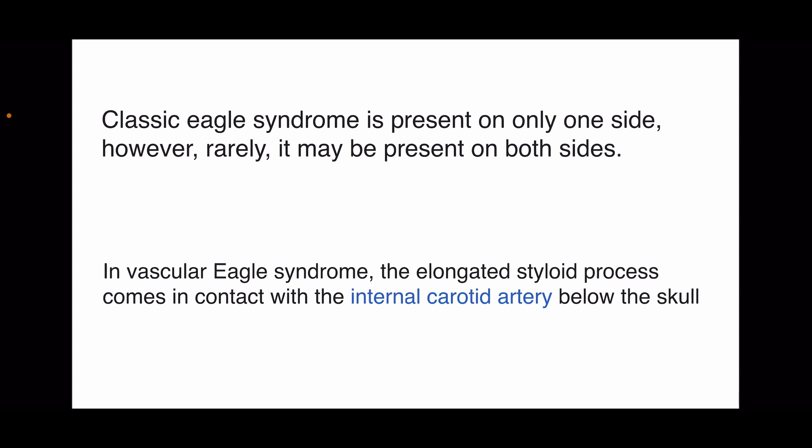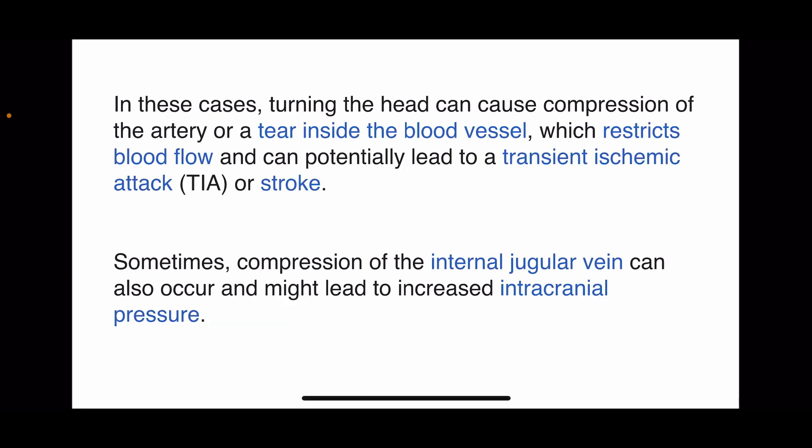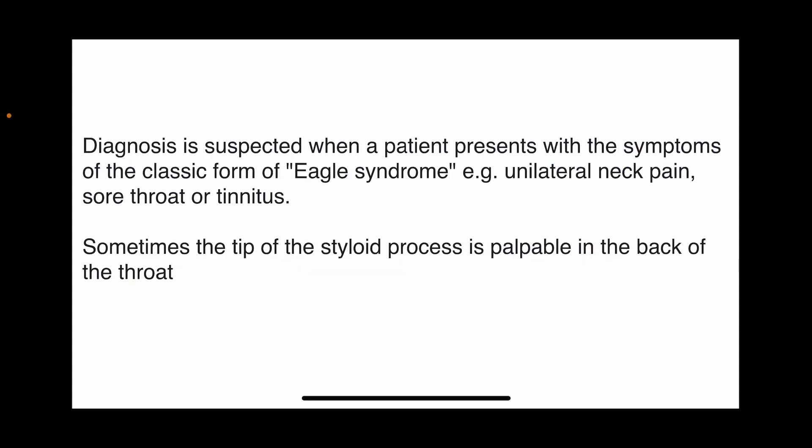In vascular Eagle Syndrome, the elongated styloid process comes in contact with the internal carotid artery below the skull. Turning the head can cause compression of the artery or a tear inside the blood vessel, which restricts blood flow and can potentially lead to a transient ischemic attack or stroke. Sometimes compression of the internal jugular vein can also occur and might lead to increased intracranial pressure.